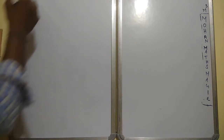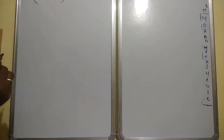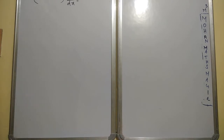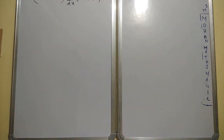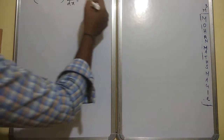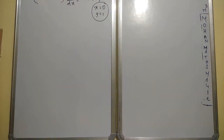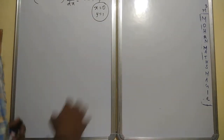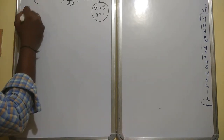Question 11: (x³ + x² + x + 1) dy/dx = 2x² + x. Find the particular solution when x = 0 and y = 1. So whenever x and y values are given, after the last step you substitute those values to find the constant C. That gives the particular solution; if you leave C unknown, it is the general solution.